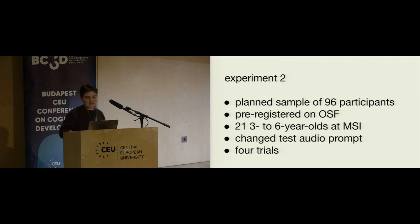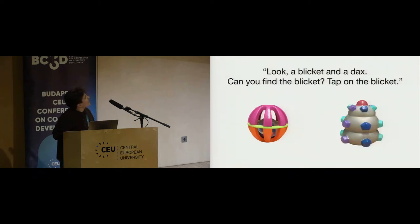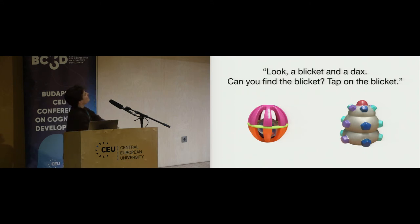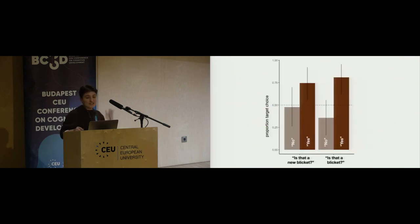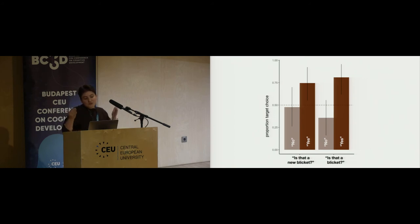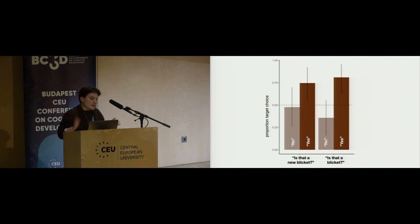We thought maybe we could give kids a little more information to make the test trial easier. In a new experiment — pre-registered on the Open Science Framework, planned sample of 96, currently 21 participants — we changed the test audio prompt to: 'Look, a blicket and a dax. Can you find the blicket? Tap on the blicket.' Now kids have information that both objects likely have names and are both reasonable candidates for being the blicket. We did reduce kids' choice of the target object considerably, and while there's variability with just 21 kids, the interaction is directionally preserved.